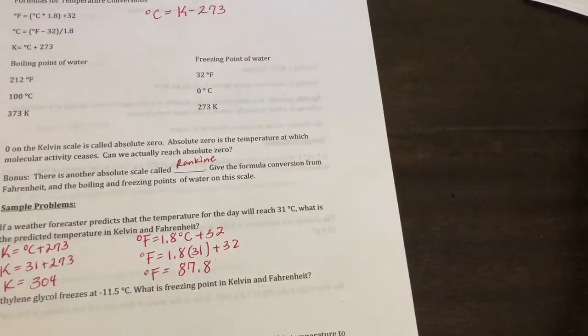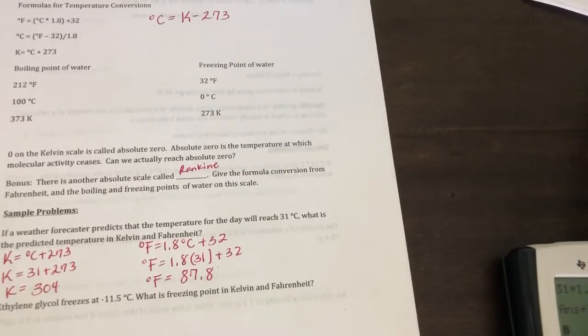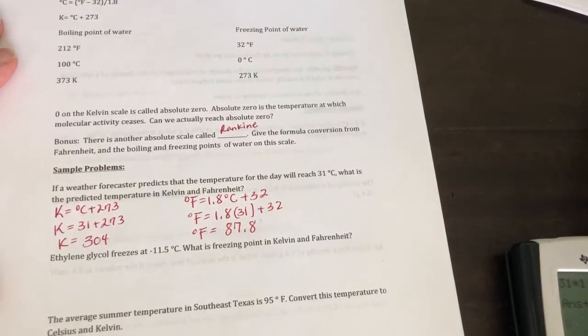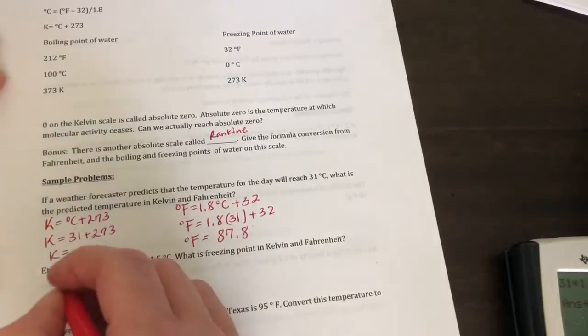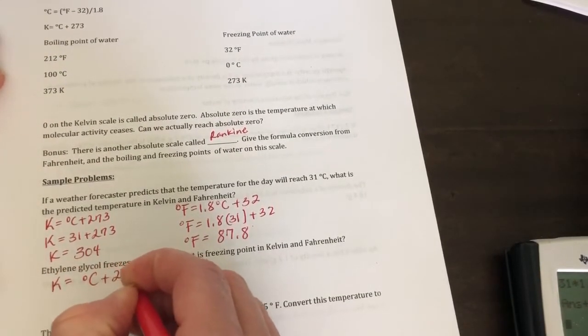Ethylene glycol, which is antifreeze, it freezes at negative 11.5 degrees Celsius. What is the freezing point in Kelvin and Fahrenheit? Okay, so Kelvin is equal to degrees Celsius plus 273.